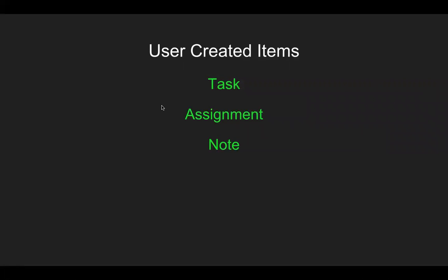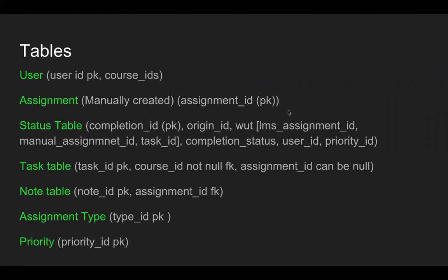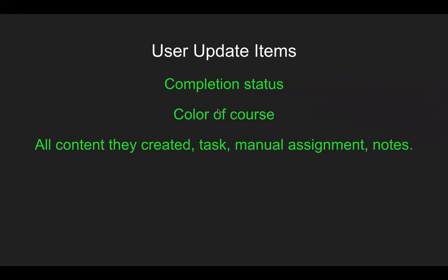These are the things that are user-created: task, assignment, and note. These are the things a user can update — they can update their completion status, which is like the checkbox, they can update the color of the course (which is not required by the way), and they can update any content they created, like a task, a manual assignment, and notes. But they can't update LMS content.